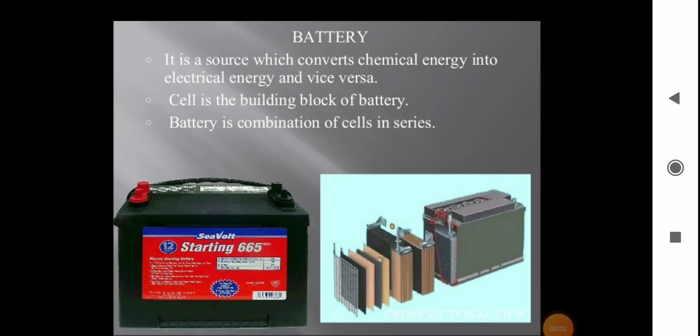Good morning everyone. Today we will discuss a new topic: batteries. Every spontaneous redox reaction can be used as the basis of a galvanic cell, but every galvanic cell is not suitable for commercial purposes. So for commercial purposes, we use an arrangement called a battery. Batteries are also called commercial cells. It is a source which converts chemical energy into electrical energy. A battery has an arrangement in which we connect a number of cells in series.